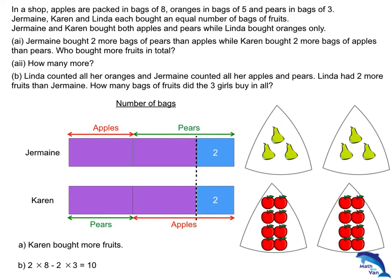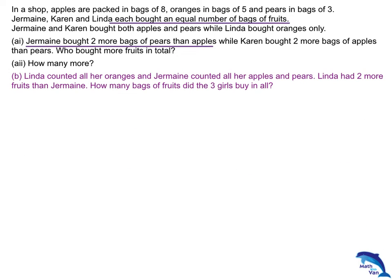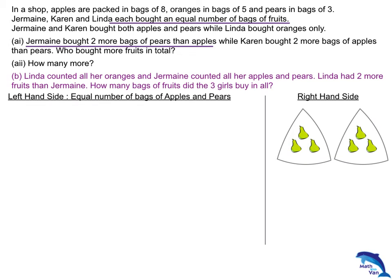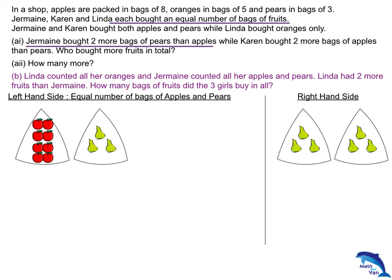Now going over to part B. Keep in mind the important facts: equal number of bags of fruits, and Jermaine bought 2 more bags of pears than apples. So let's take out the 2 and put them on the right-hand side. What remains on the left-hand side must be an equal number of bags of apples and pears — 1 bag of apples for every 1 bag of pears. I don't know how many groups there are on the left-hand side.